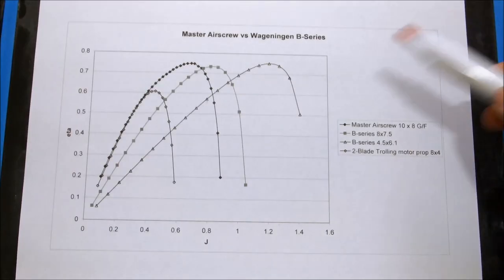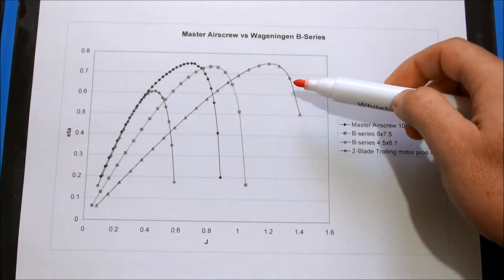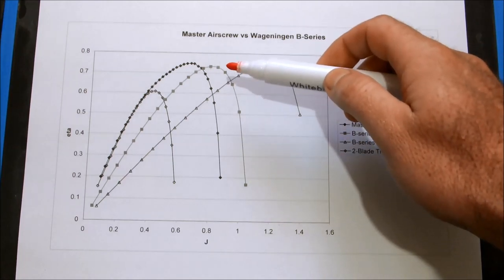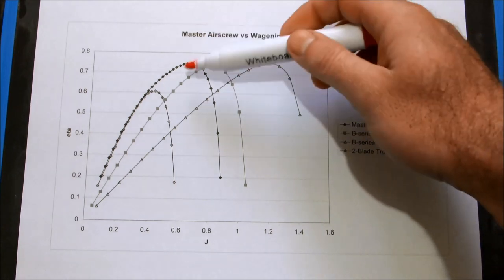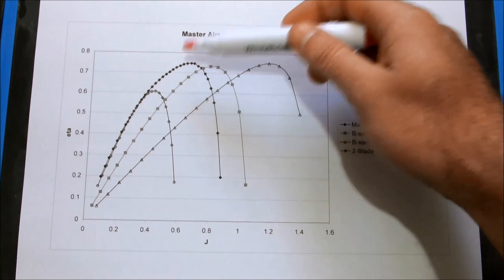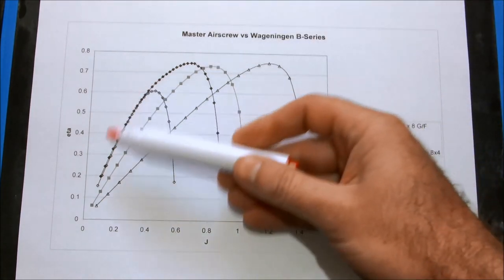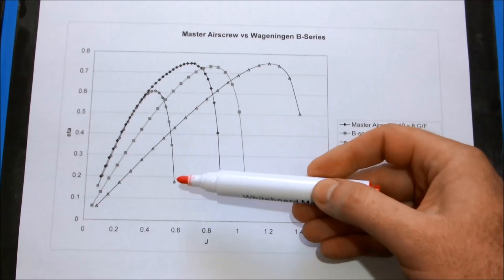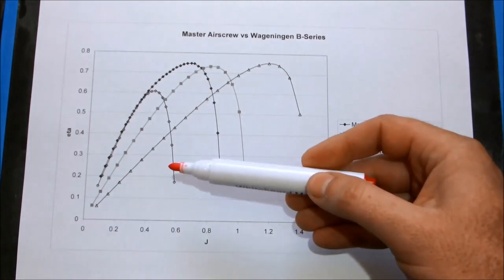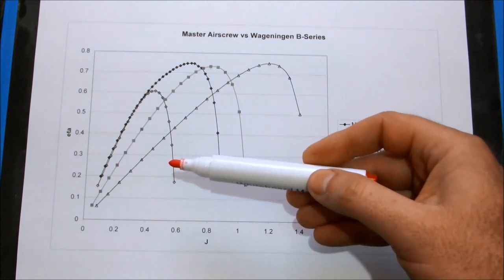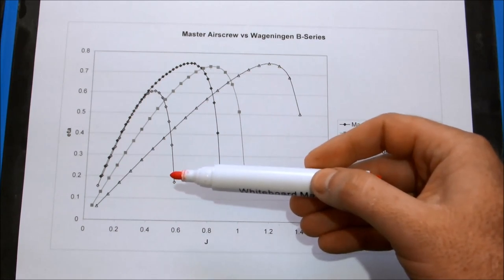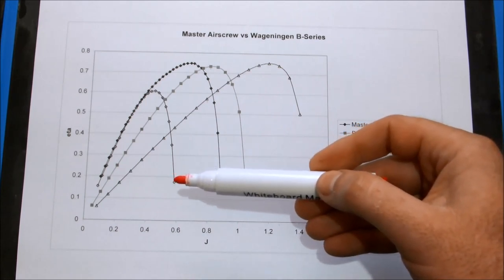Right, all together now. This curve is that of the small 3 blade marine propeller. That is the 8 inch marine propeller. And that curve over there is the aircraft, the model aircraft propeller. And then just for good measure I also included the performance figures for a trolling motor with an assumed pitch to diameter ratio of 0.5. So something like an 8 by 4. That is a very typical size for a small electric trolling motor.